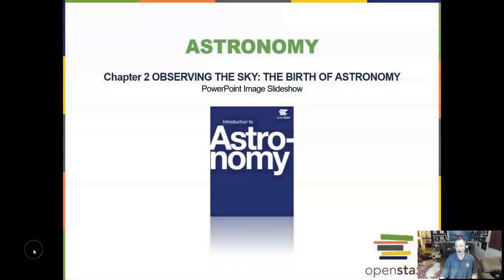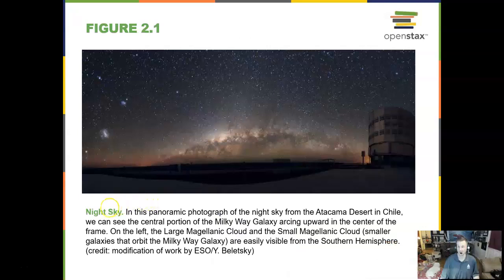So let's jump into Chapter 2 PowerPoints. Chapter 2 is on observing the sky, the birth of astronomy. So we have seen the night sky in Chapter 1, and this is a panoramic photograph from Chile. We see a lot of photos in Chile. It's a very dark place. As you well know, the desert is very beautiful and dark, and we have that down there.